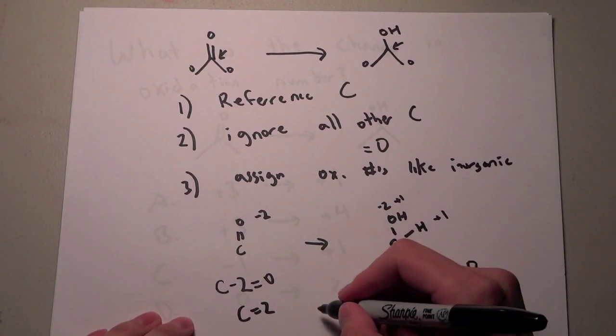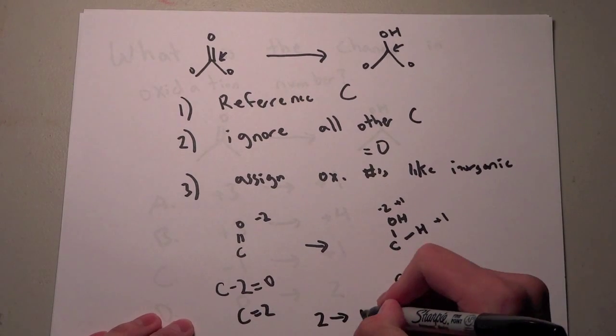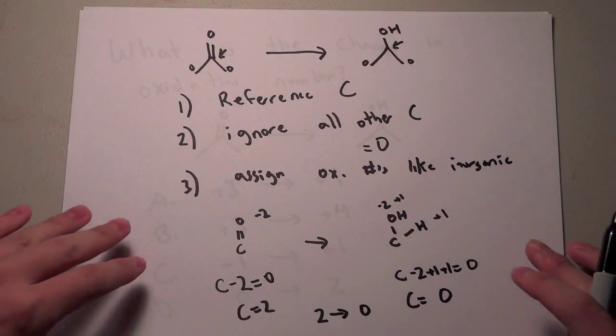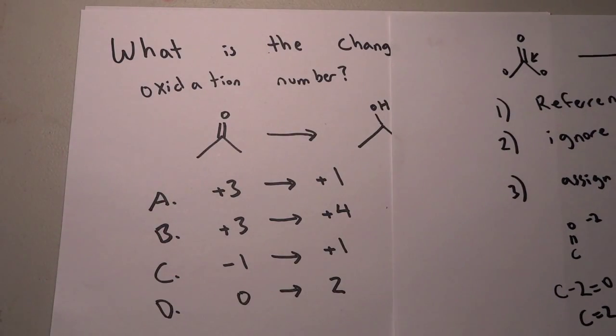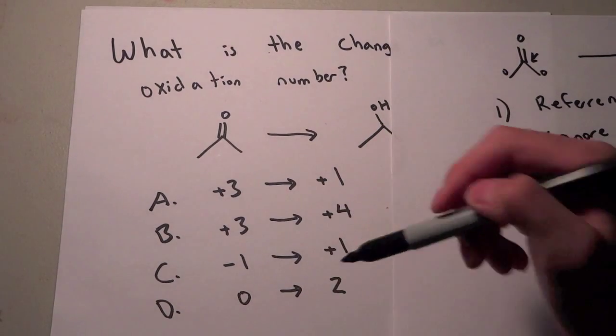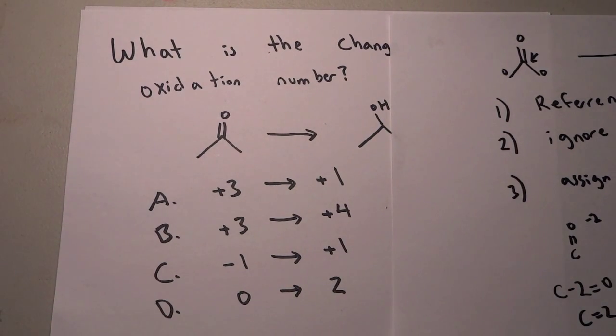So we know that this has to be a reduction. So it went from 2 down to 0, the oxidation number went down, so that's obviously a reduction. So we go back to our answer. And we see that, okay, 2 to 0, let's try to find 2 to 0. So nothing went from 2 down to 0. So what do we do?